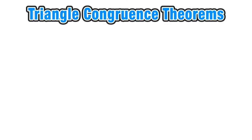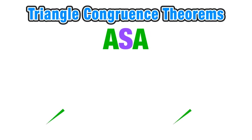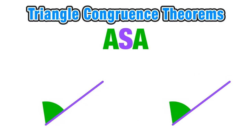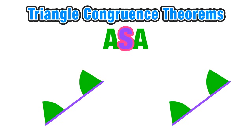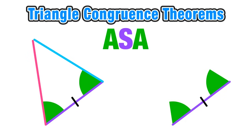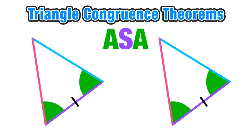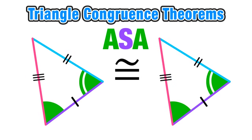Our next congruence theorem is the angle-side-angle theorem. When we have two triangles with a pair of corresponding congruent angles, a pair of corresponding congruent sides, and another pair of corresponding congruent angles, we have enough information to prove congruence using angle-side-angle. It's important to notice that the congruent side is in between the two congruent angles. This means we have enough information to prove that the two triangles are congruent by angle-side-angle, which means all of their corresponding sides and angles have the same measure.